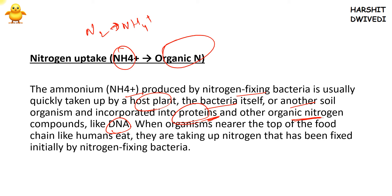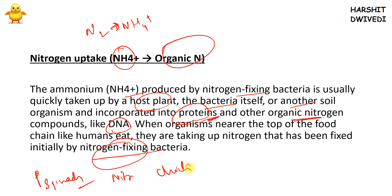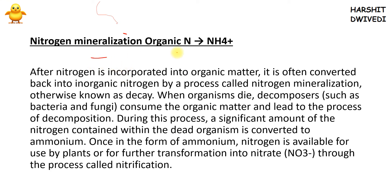When humans or carnivorous animals higher in the food chain consume food, the nitrogen they intake has ultimately been fixed by nitrogen-fixing bacteria. For example, eating spinach means directly taking nitrogen from the plant; eating chicken means taking nitrogen that was originally fixed by nitrogen-fixing bacteria. So in nitrogen uptake, NH4⁺ is assimilated into organic nitrogen inside an organism.